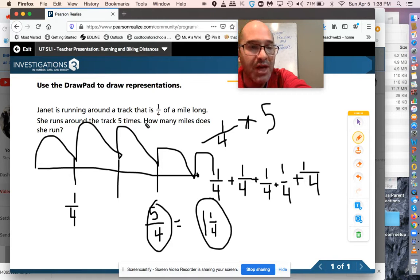So if Janet did five one-fourths or one-fourth times five, we could add one-fourth five times. We get five-fourths, which is the same as one and one-fourth.